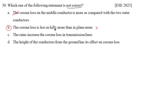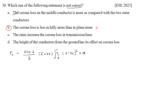Why is corona loss more in hilly areas? The expression for corona loss is: Ec = (242.2 / δ) × (f + 25) × √(r/d) × (V − Vc)² × 10⁻⁵ kW per km per phase. Here δ is the air density factor, f is supply frequency, r is conductor radius, d is conductor spacing, V is phase voltage, and Vc is the disruptive critical voltage. Corona loss is proportional to (V − Vc)².